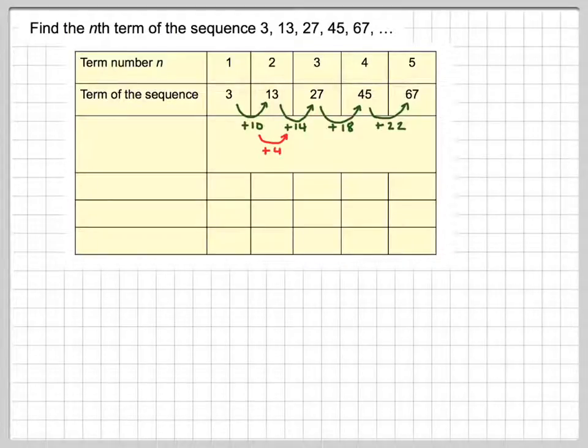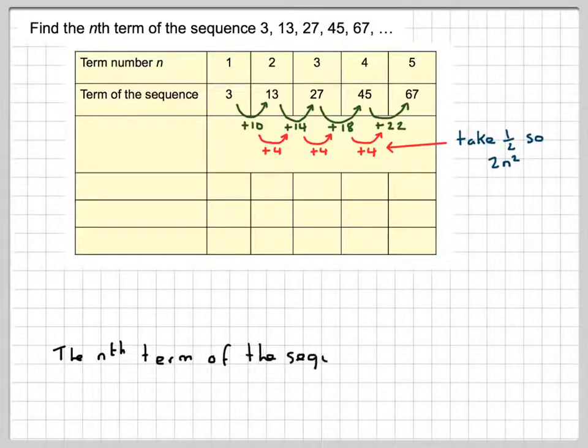Then you look at the differences. The differences we get plus 4 each time. Therefore, this is a quadratic sequence. What you do, you take half of 4, which is 2. And therefore, the sequence begins with 2n squared. So the nth term of the sequence starts with 2n squared. We're going to have to find out what else we need to put in.